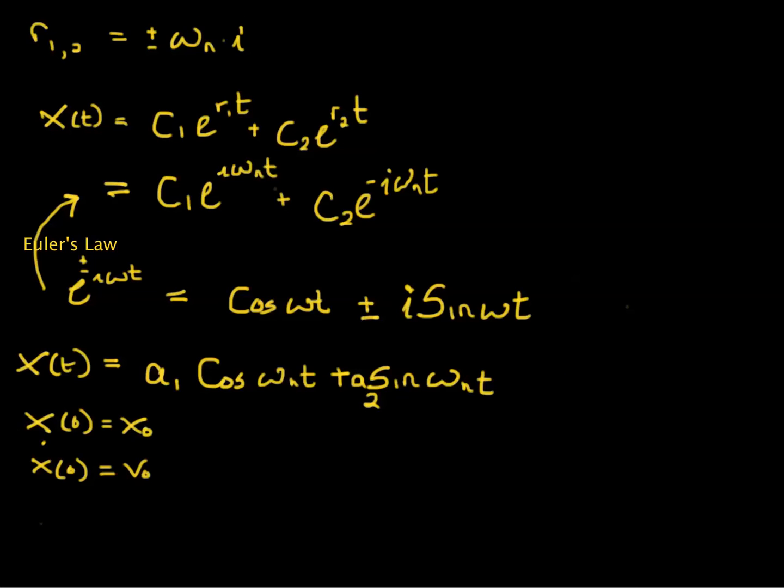Substituting the first one, x of 0, cosine of 0 is 1, sine of 0 is 0, so all you're left out here is a1 is equal to x0.